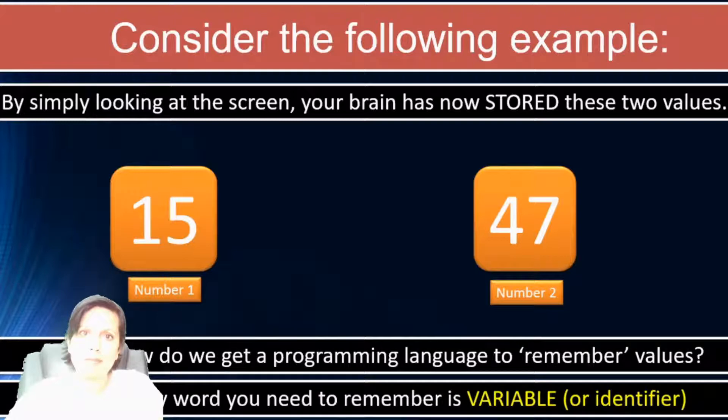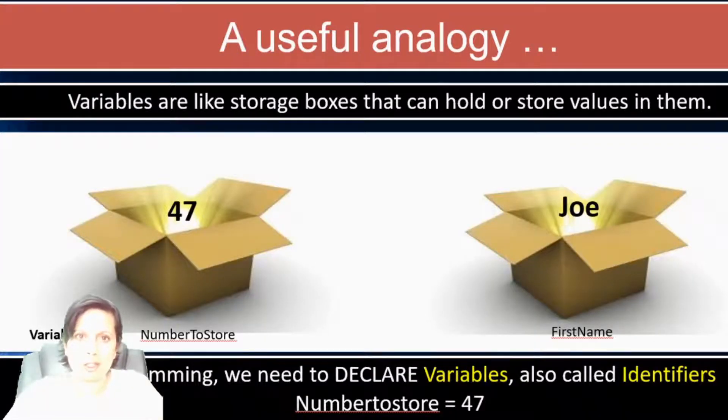If you have a memory, which you probably do, you'll probably say 15 and 47. And something to consider is, how did your brain, which is a lump of flesh, how did it remember those numbers? The brain is still a mystery. We understand some of it, not all of it. But we can tell you how computers remember.